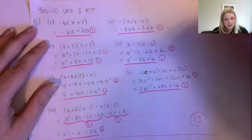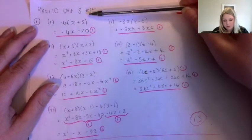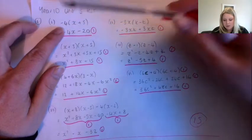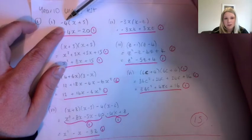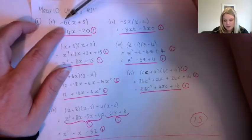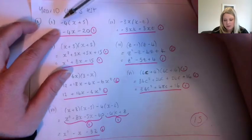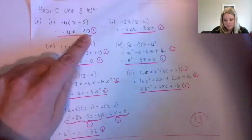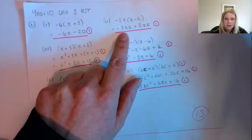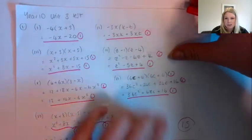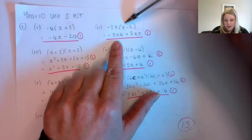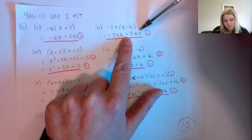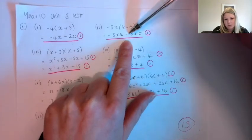So this was our algebra test. The first set of questions was all on multiplying out brackets. Remember, everything in the bracket has to be multiplied by the number or letter right beside it. In this case, minus 4 has to be multiplied by x and 5. So minus 4 times x gives us minus 4x, and minus 4 times 5 gives us minus 20. We just have to be super careful with our rules for multiplying with negatives. For example, minus 3x times k gives minus 3xk, and minus 3x times minus t gives plus 3xt. A few people made a mistake on that one.